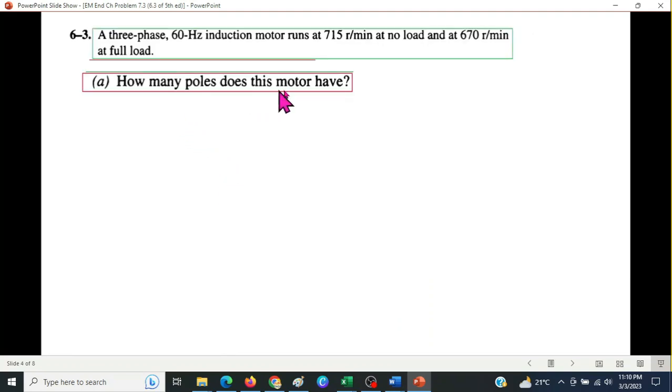The first point is how many poles does the motor have? Now, what is given, let's note down that the rotor speed is given 715, this is at no load. We had just discussed that the synchronous speed has to be greater than the rotor speed. So we can assume a value, I am just assuming 750, that value has to be greater than this. 750 revolutions per minute.